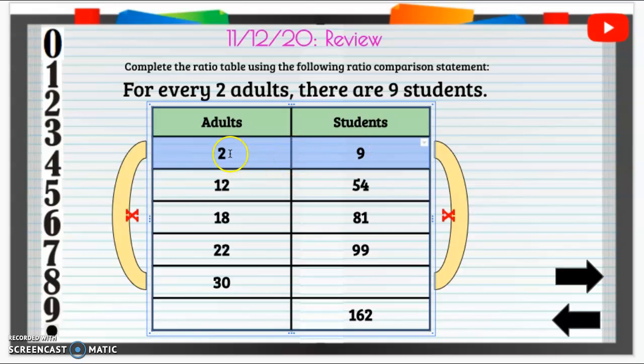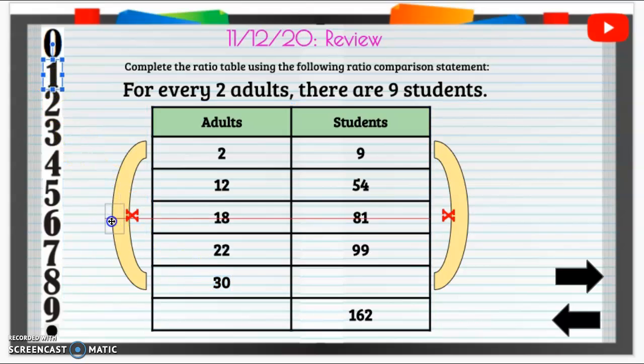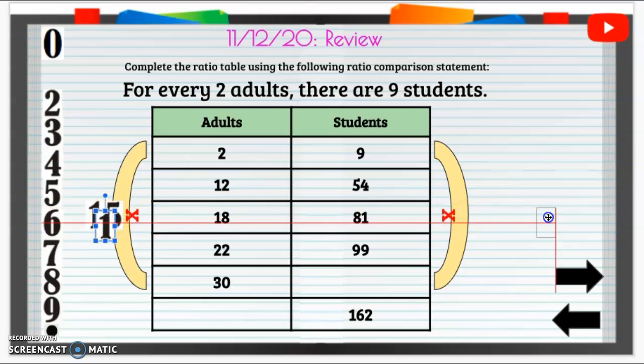So two times what equals 30? I know two times 15 is 30. Two times 15. So two times 15 is 30. So what you do to that side you must do to the other side.